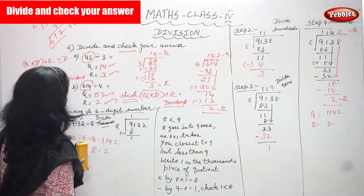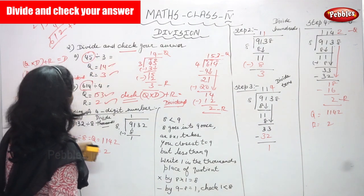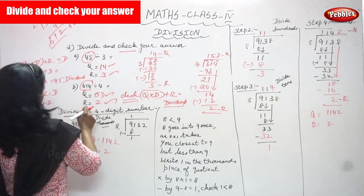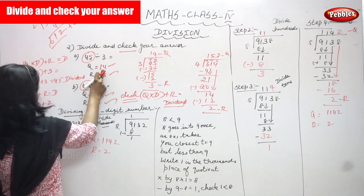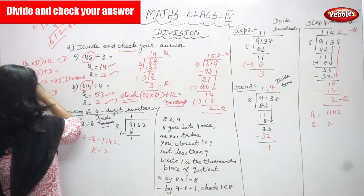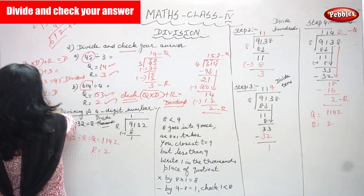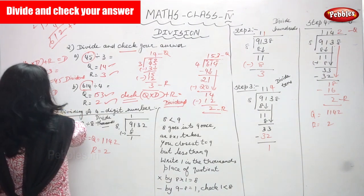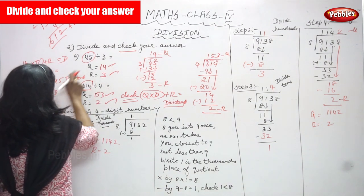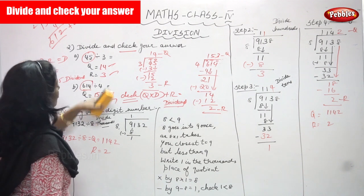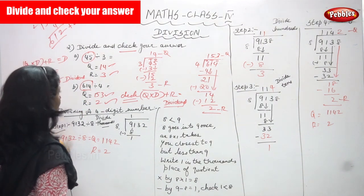That is very important. For the first sum, 45 divided by 3: quotient is 14 and remainder is 3. Substitute into the formula — quotient into divisor: 14 into 3 gives 42. Add the remainder: 42 plus 3 gives 45, which is the dividend. Whatever answer you find, the quotient 14 and remainder 3 are correct.